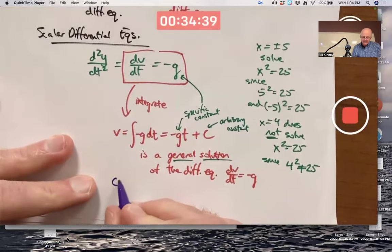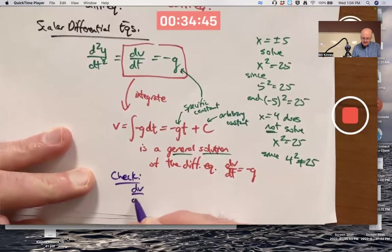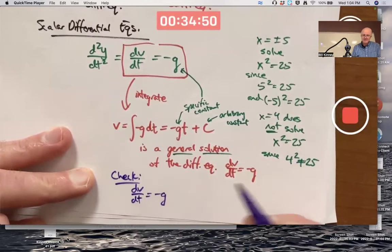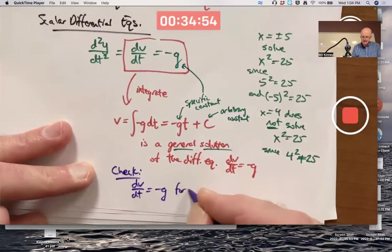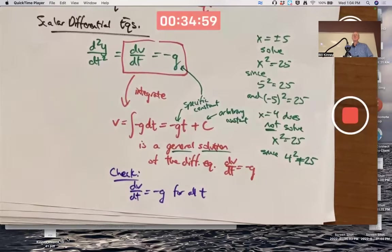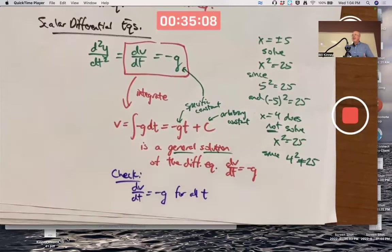You can always check it by differentiation. Very simple here. dV/dT, differentiate this with respect to T, you get negative G. There we go. Doesn't matter what T is. That derivative is constant. This equation is satisfied when I plug in this function.